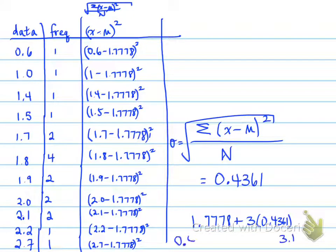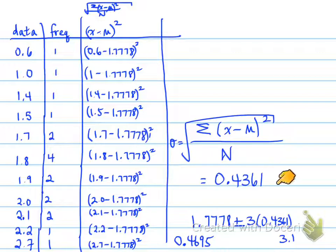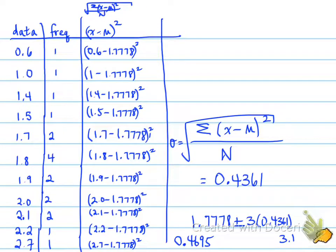Checking our values: the data should fall between 0.5 (lowest) and 3.1 (highest). Since all data values fit within this range, our standard deviation of 0.4361 is confirmed accurate. Recall that three standard deviations from the mean indicates the range of values, which we can use to verify our data is correct.